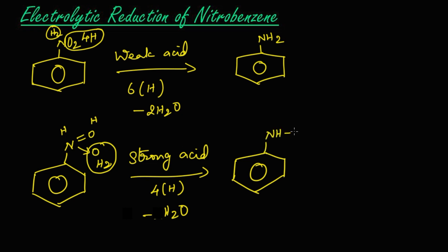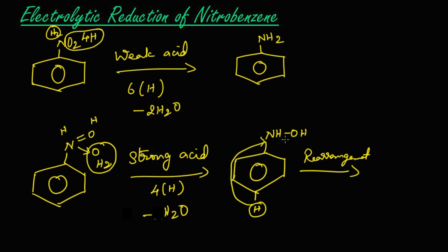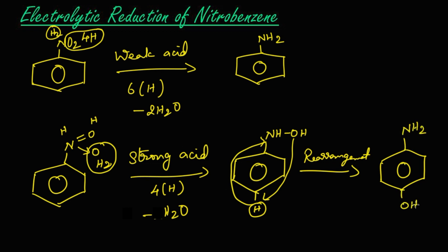So we get N–H and O–H, which is known as phenylhydroxylamine. On rearrangement, the OH will replace as hydrogen, so we get NH₂ and OH here, which is known as para-aminophenol.